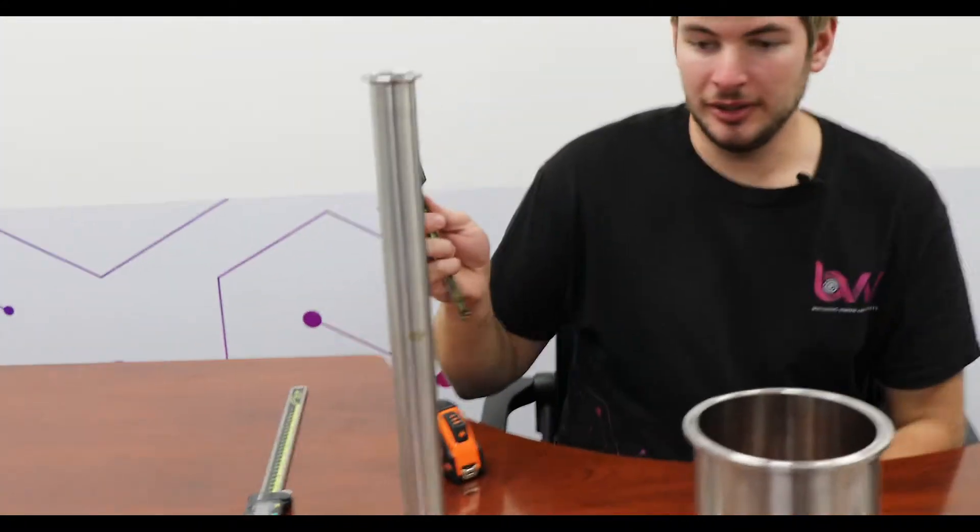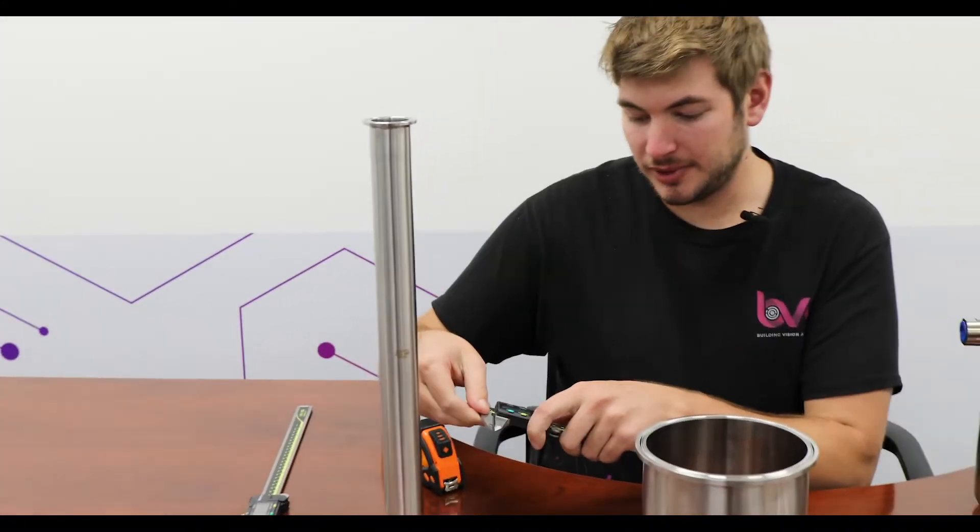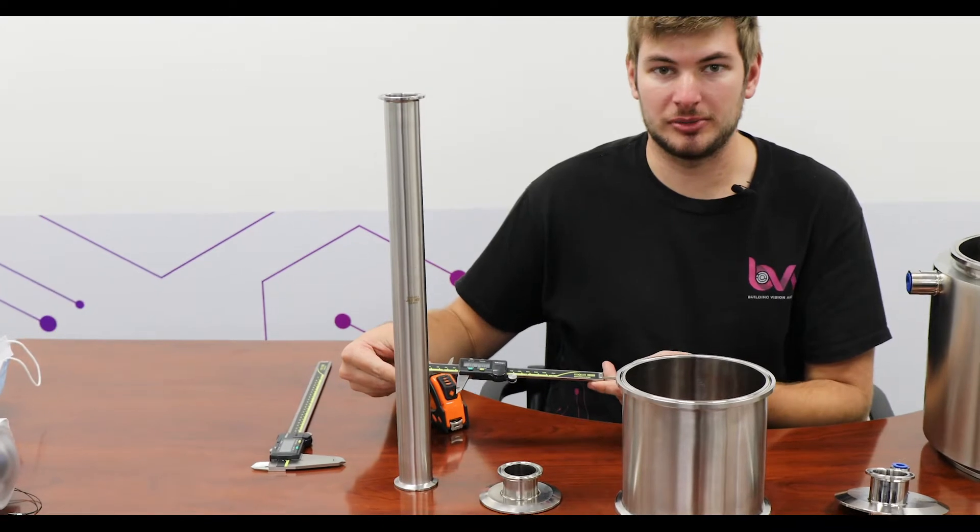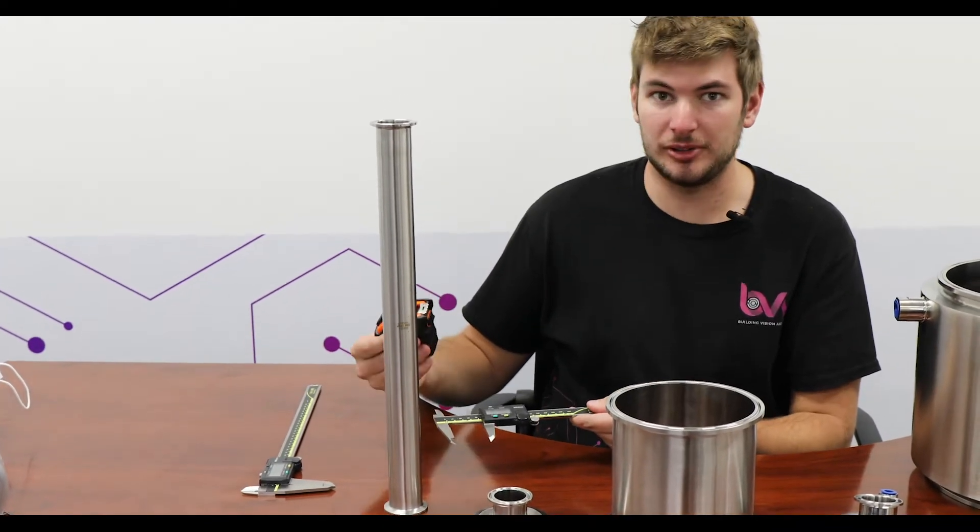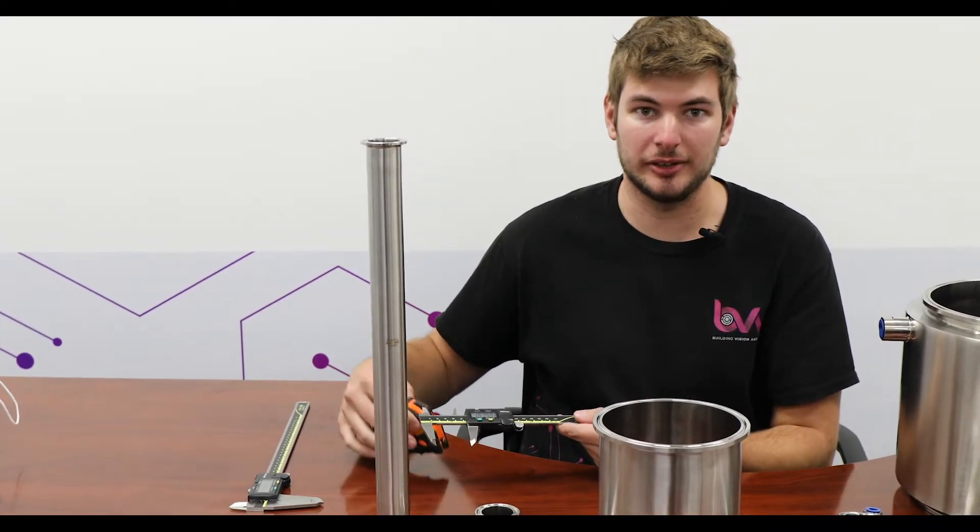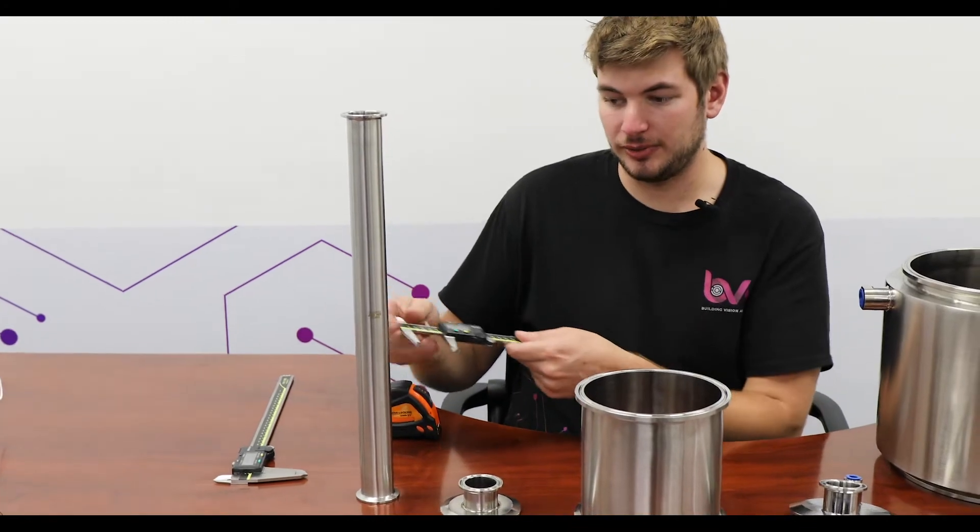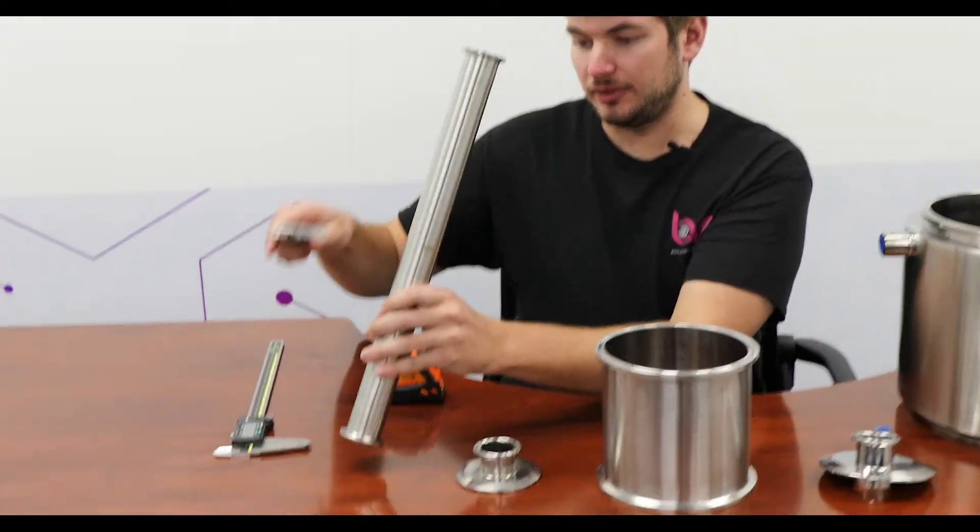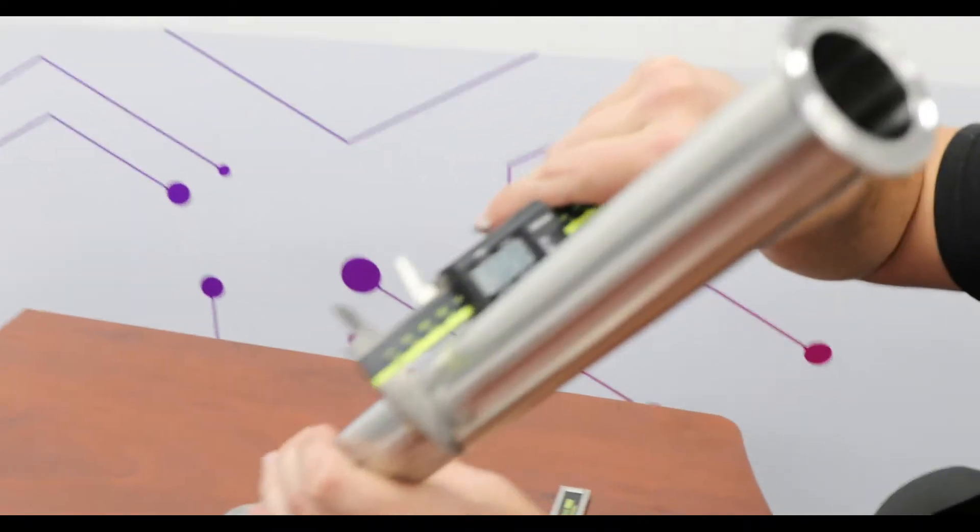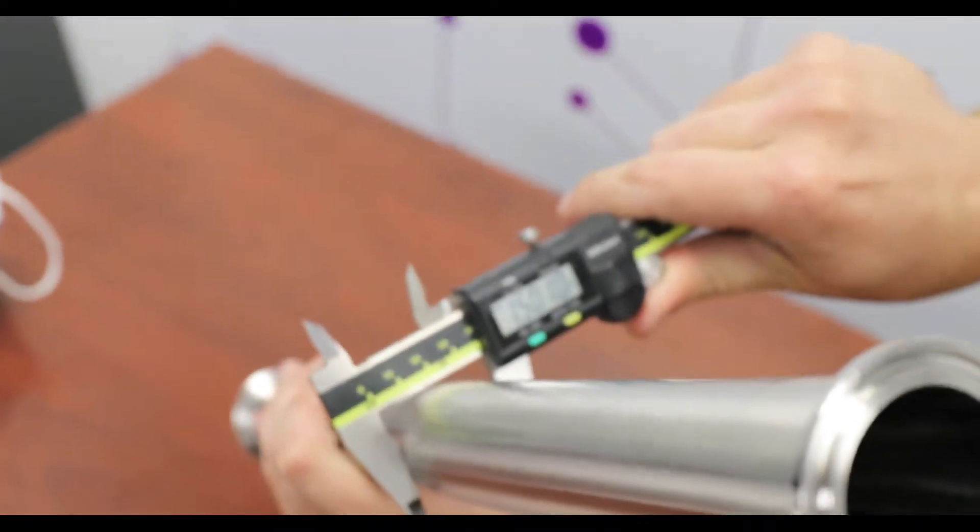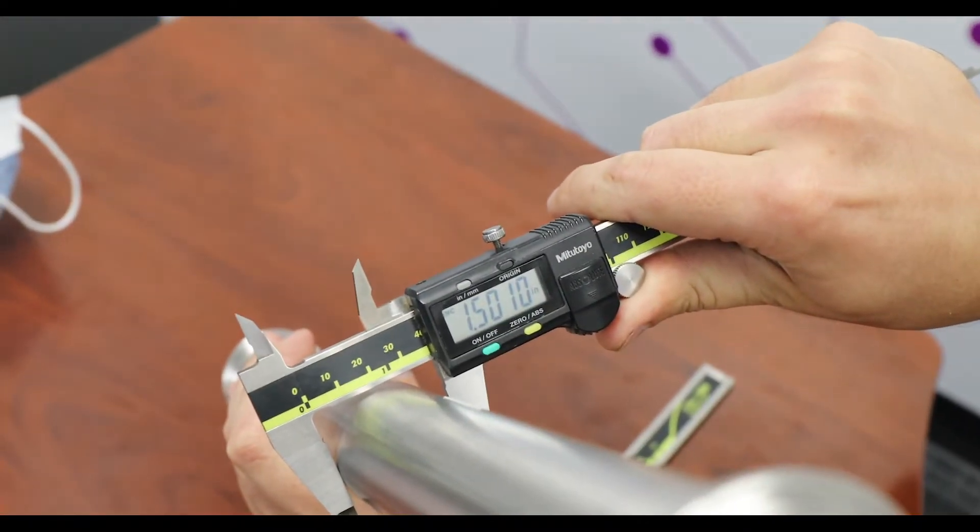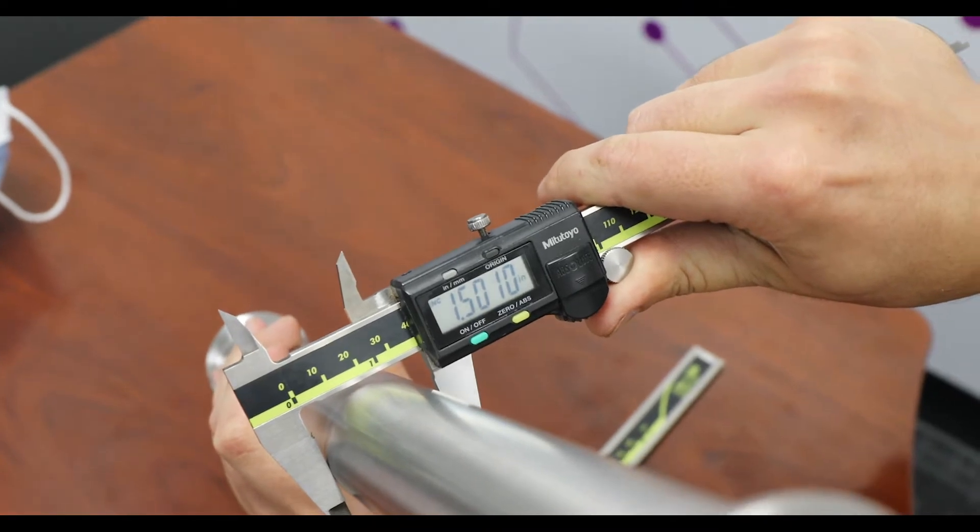So I'm going to grab my caliper here. A lot of people order the wrong size parts when they're measuring. They might be using a tape measure for smaller parts, which is more inaccurate, but I have a caliper for accuracy. So first I'm going to measure this spool. You can see that it's just over 1.5 inches, 1.501, so this is going to be a 1.5 inch spool.